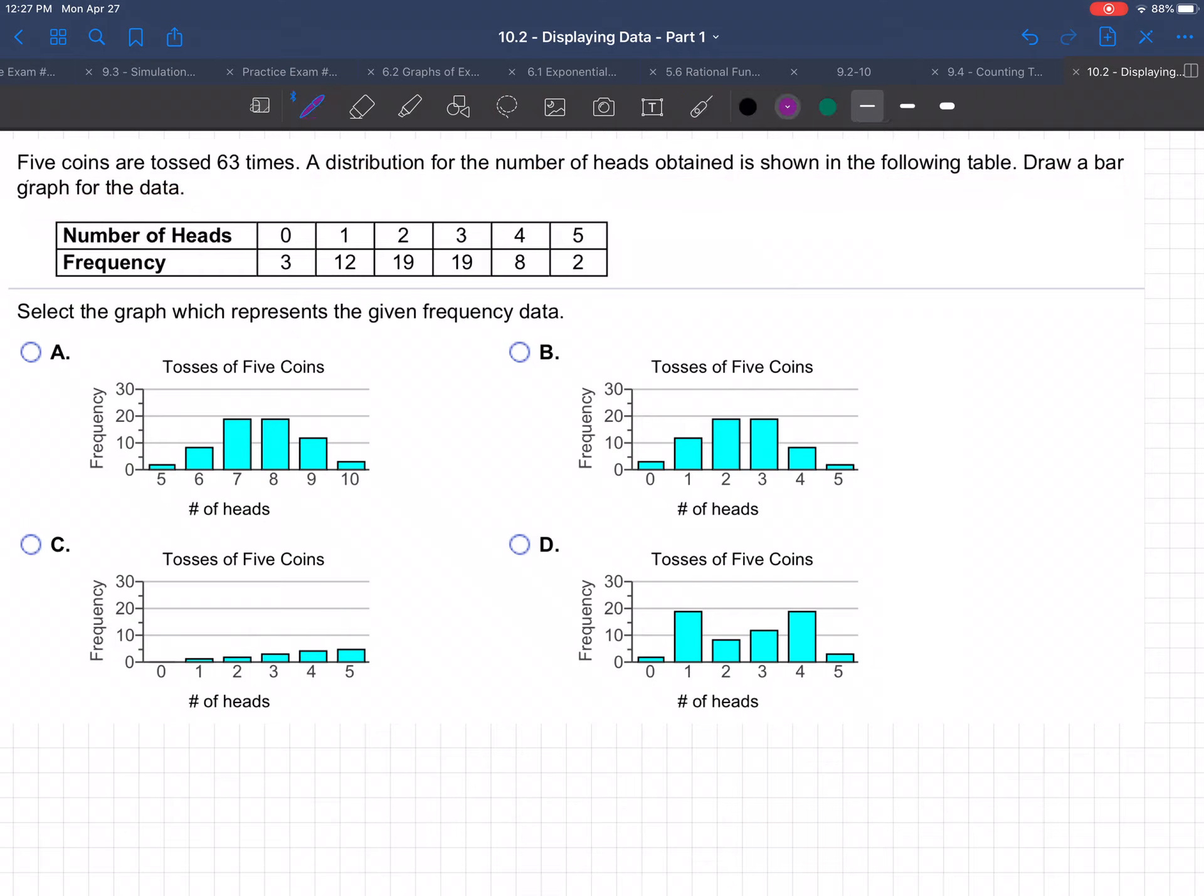So do you understand what they're saying? They tossed five coins, and they did this 63 times. So when you toss five coins you could get zero heads. That happened three different times. Frequency means how many times something happened, how frequently it happened. Right? So three different times that happened.